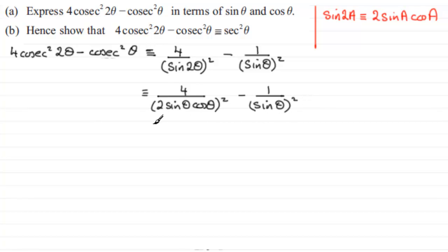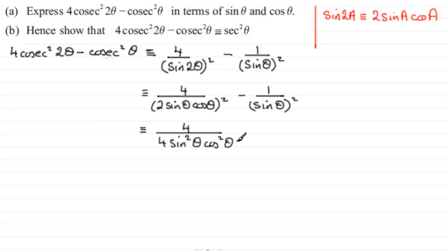Let's tidy these terms up. For the first term we've got 4 on top, but underneath if we square it out we've got 2² which is 4, then sin²θ, then cos²θ. For the term minus 1 over sinθ all squared, that can be written as minus 1 over sin²θ. Notice that these two 4s cancel one another out, so we've got 1 over sin²θcos²θ minus 1 over sin²θ.